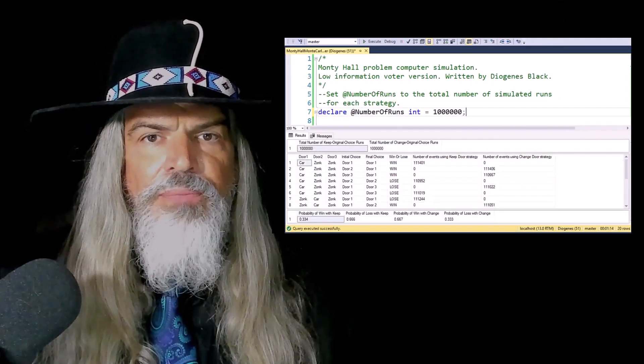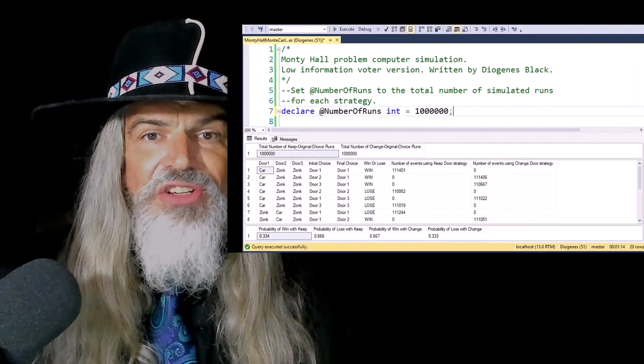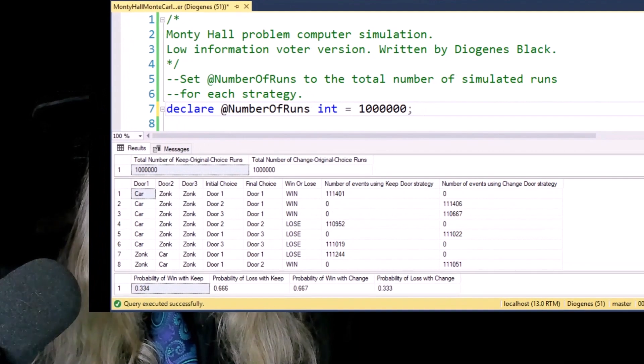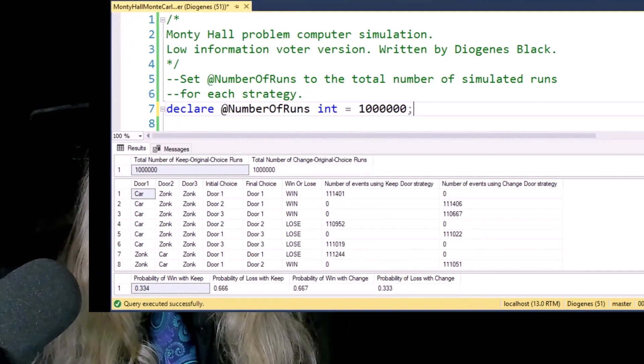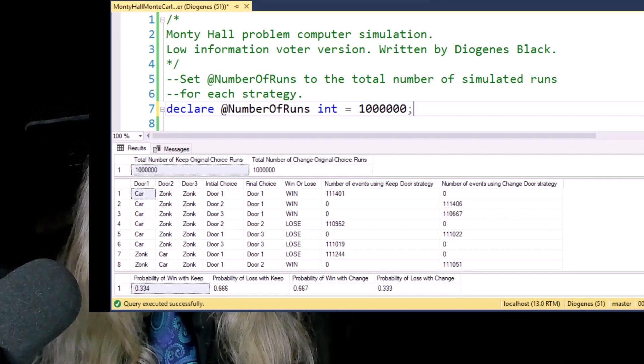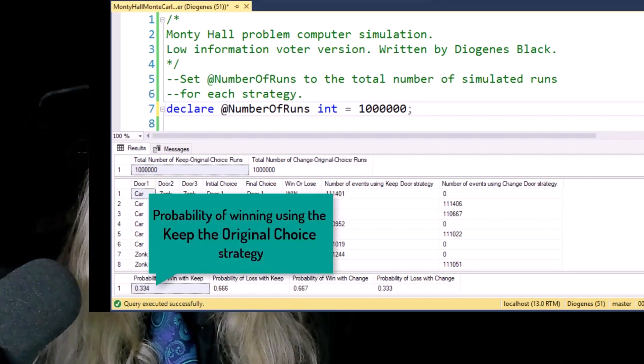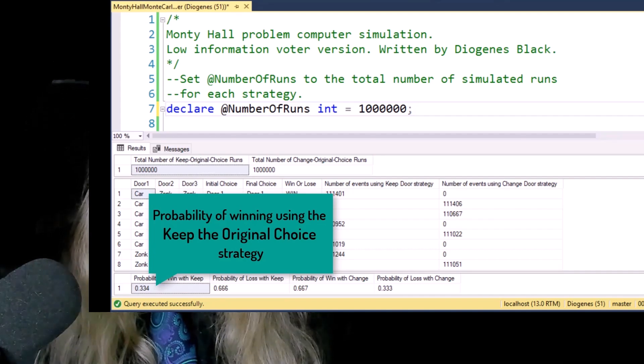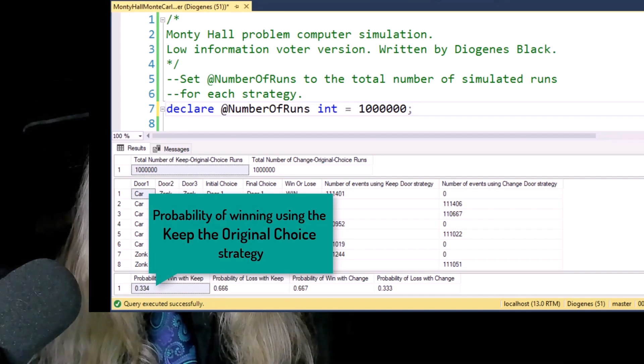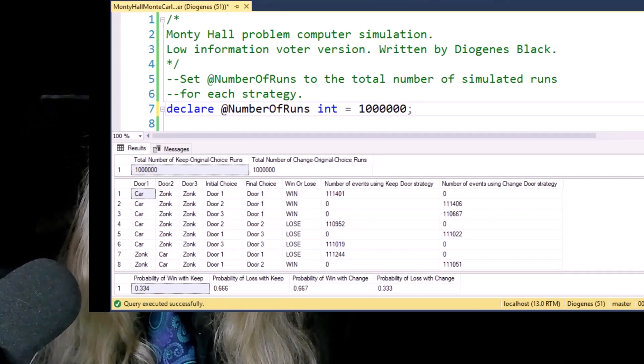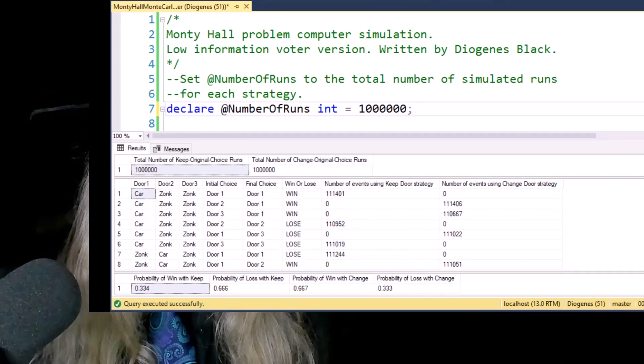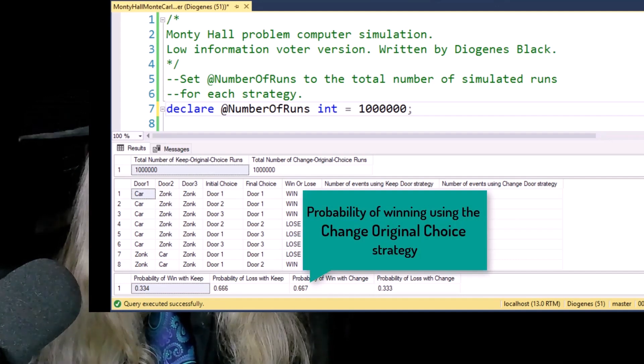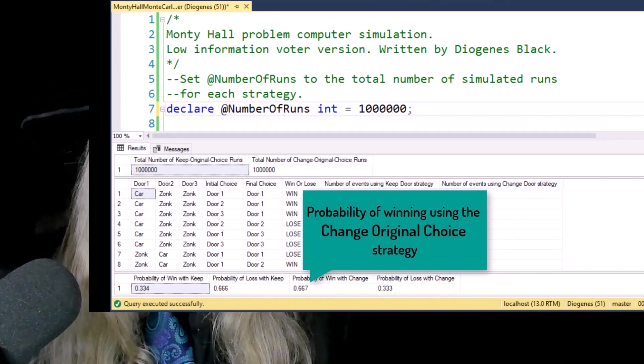So finally, the results are summarized and displayed here. As you can see, we ran a million rounds for each door choice strategy. And the results are exactly as predicted. One-third of the rounds won a car when the strategy was to switch to the other unopened door.